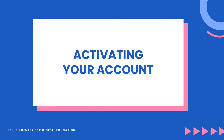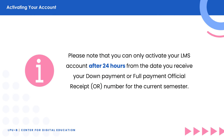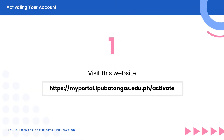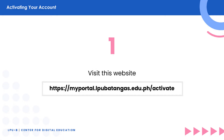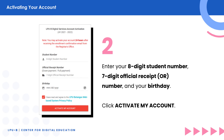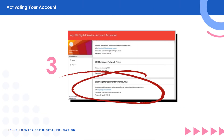Before accessing the MyLPU e-learning portal, you have to activate your account first. Please note that you can only activate your LMS account after 24 hours from the date you receive your down payment or full payment official receipt number for the current semester. Here are the steps. Step 1: Go to this website. Step 2: Enter your 8-digit student number, 7-digit official receipt number, and your birthday, then click the Activate My Account button. Step 3: Under the Learning Management System section, get your username and password.